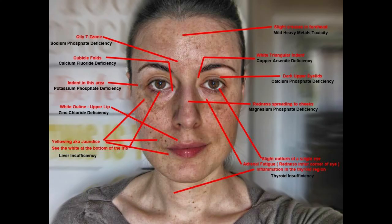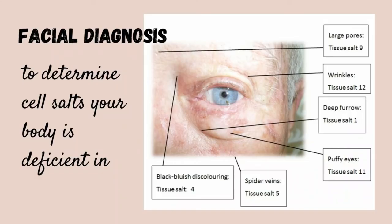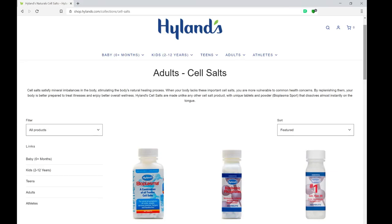Schuessler also discovered that signs of mineral deficiency generally show up on the face — that could manifest as dark circles, skin discoloration, or specific lines around the forehead. One way to determine the right cell salt for you is to look at certain signs in your face. This approach is also called face analysis or facial diagnosis.